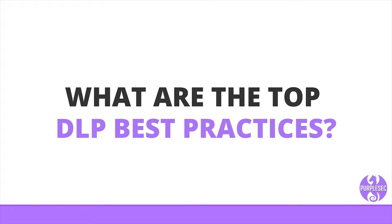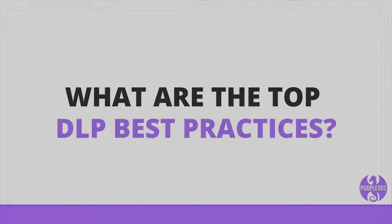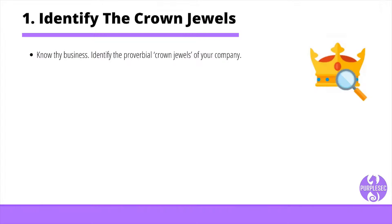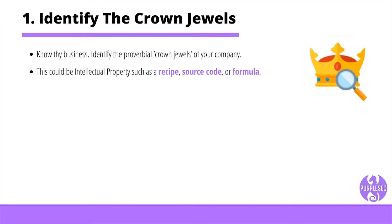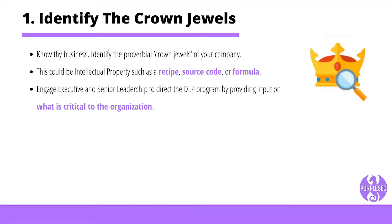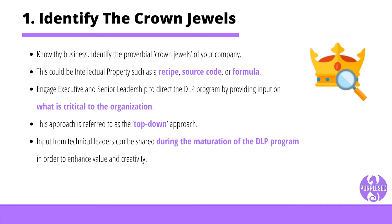What are the top DLP best practices? Identify the crown jewels. Know thy business — identify the proverbial crown jewels of your company. This could be intellectual property such as a recipe, source code, or formula. Engage executive and senior leadership to direct the DLP program by providing input on what is critical to the organization. This approach is referred to as the top-down approach. Input from technical leaders can be shared during the maturity of the DLP program in order to enhance value and creativity.